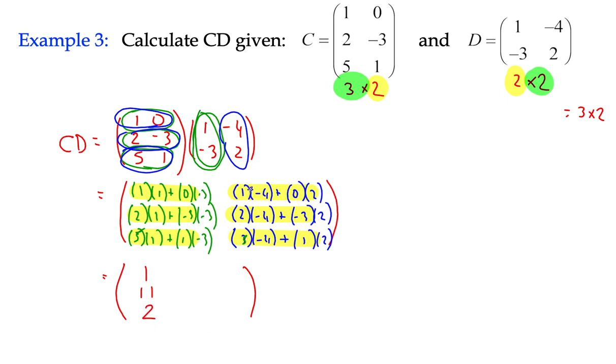And in the second column, I'm going to do negative four plus zero is negative four. I've got negative eight plus negative six is negative 14. And I've got five times negative four is negative 20 plus two, negative 18.